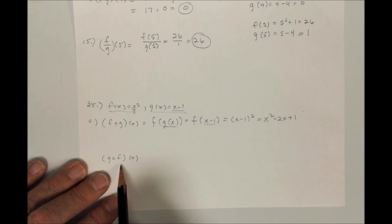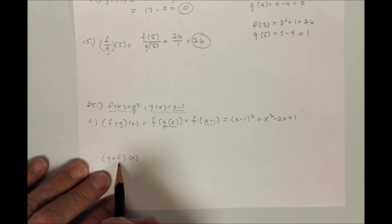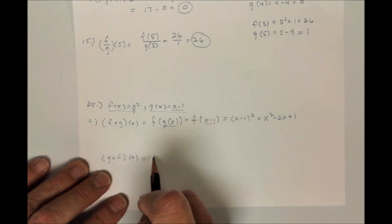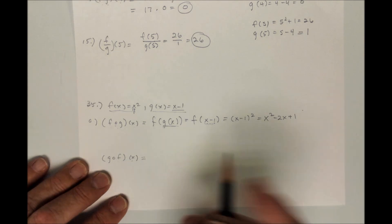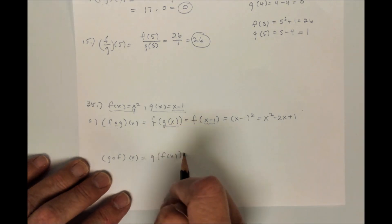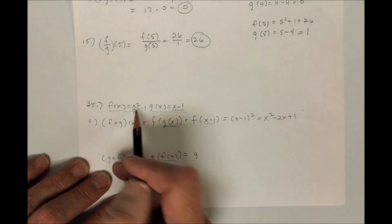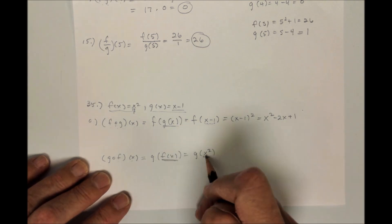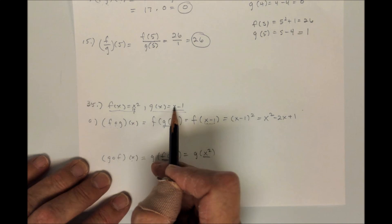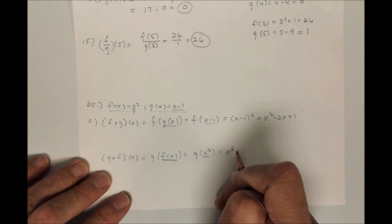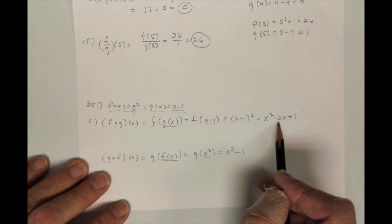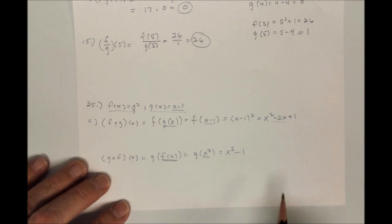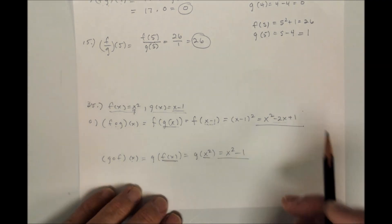Will you get the same thing if you change the order? As it turns out, it's not always commutative — it depends on the functions, but in general it's not commutative. So g circle f of x would be g of f of x. G of f of x: f of x is x squared, so I replace f of x with x squared, and then I'm taking g of that — plugging x squared in for the variable. So I get x squared minus 1. They aren't that different, but they are different.